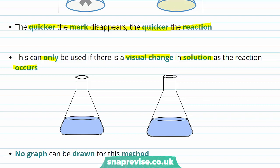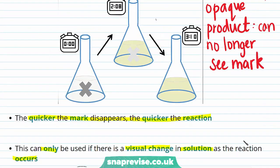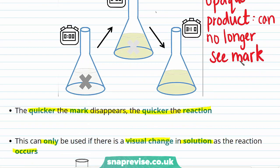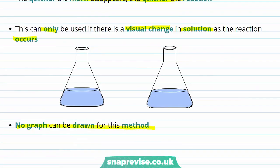The method is very simple, but it's also subjective, as people might disagree at what point the mark actually disappeared. Another downside of this method is that you can't draw a graph for it, and therefore it's only really useful for getting an estimate of how fast a reaction happens, or for comparing reactions directly.